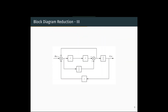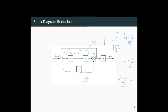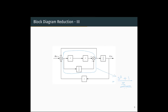Now we move on to another example. In this block we have S and S in series, so we multiply them to get S squared. That result is in parallel with 1/S, so we just add them. The equivalent block is S squared plus 1/S, which equals (S³ plus 1) divided by S. This entire part within the blue block reduces to (S³ plus 1) divided by S.